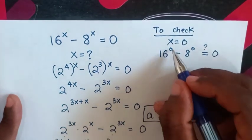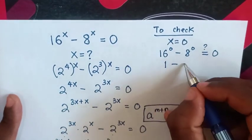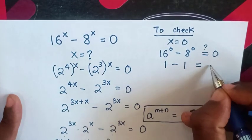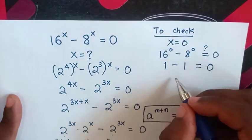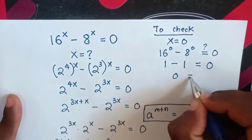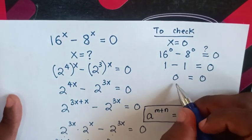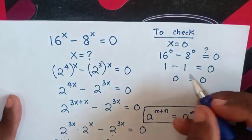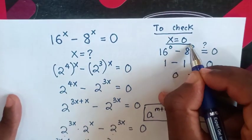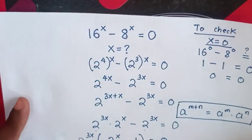Then 16^0 is 1 minus 8^0 is 1, is it equal to 0? So 1 - 1 is 0 which is equal to 0. So as left side and right side are equal, so it's true for the value of x = 0. Thank you for watching.